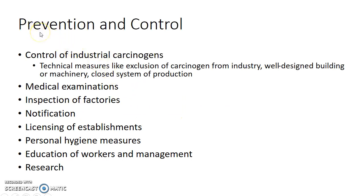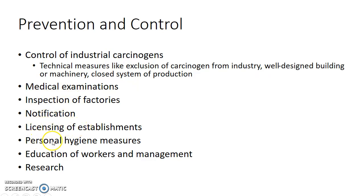Occupational cancers can be prevented by control of industrial carcinogens by employing technical measures like exclusion of carcinogens from industry, well-designed buildings or machinery, and closed system of production. Medical examinations should be done periodically, inspection of factories and supplies should be done, notification of cancers should also be done. Licensing of establishments, personal hygiene measures, education of workers and management, and research are all various measures to prevent and control occupational cancers.